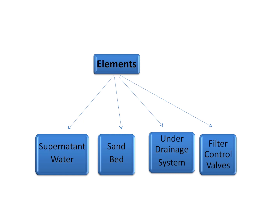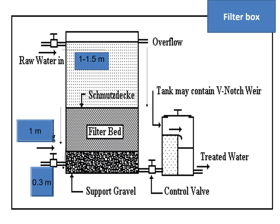Supernatant water is the water that is stored above the sand bed. As the name suggests, water stored above a particular surface is called supernatant water. Below this water is the sand bed, and under the sand bed is the drainage system which controls the outflow of water after purification. To control this outflow there are filter control valves. A slow sand filter consists of these four elements.